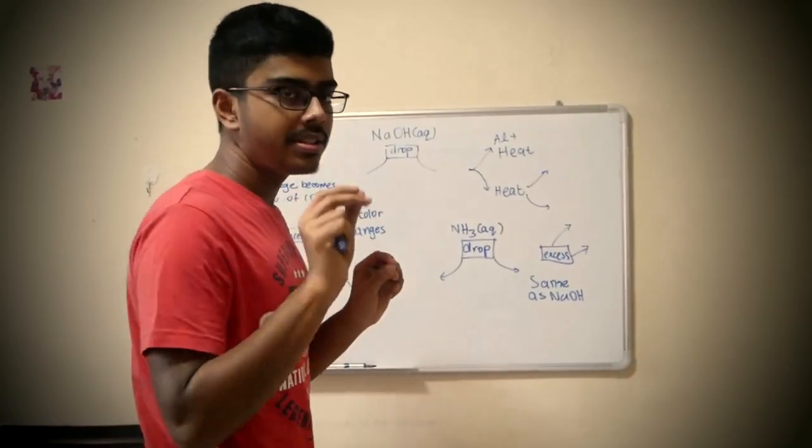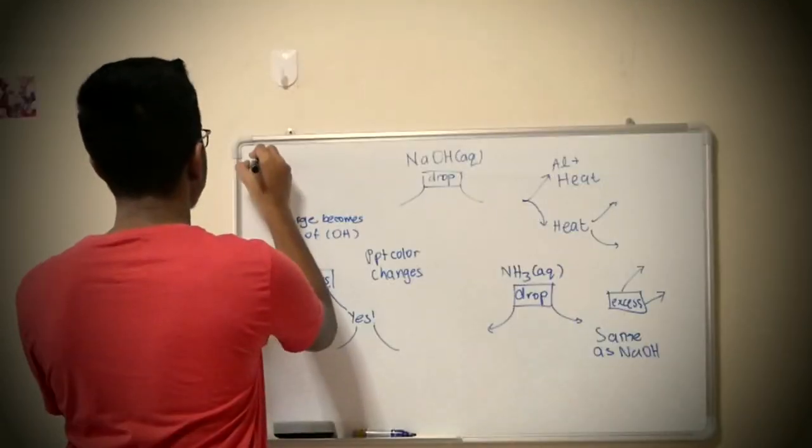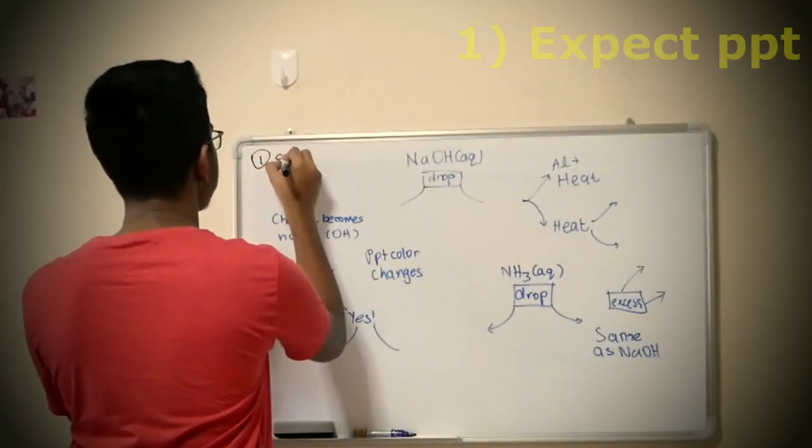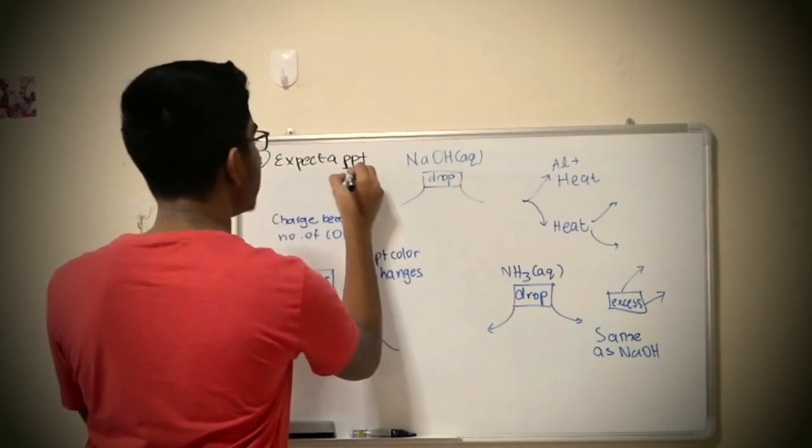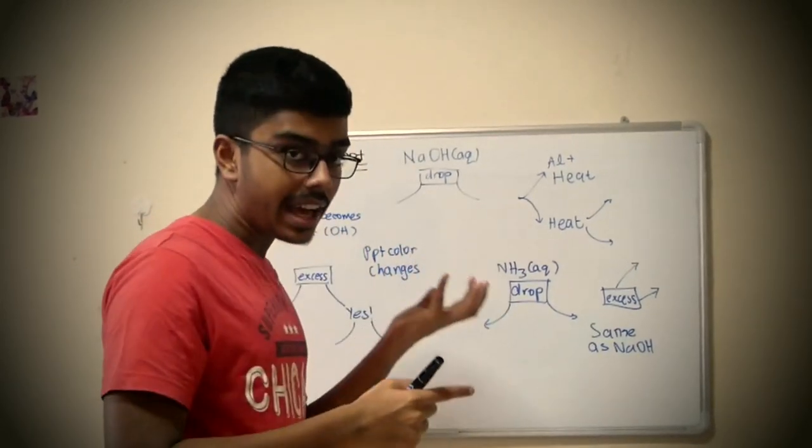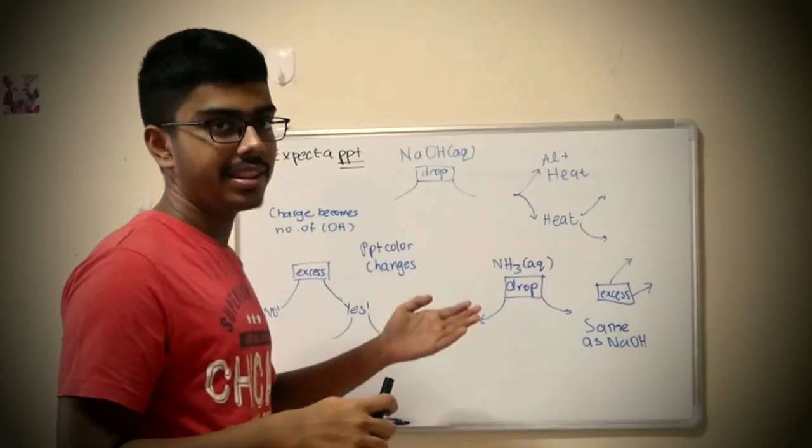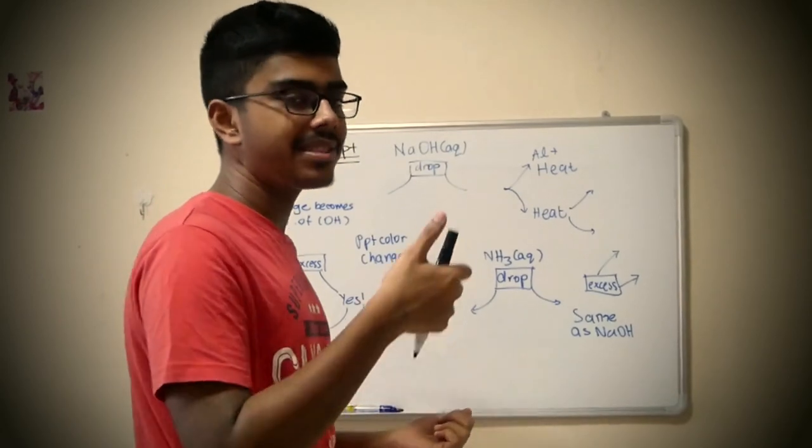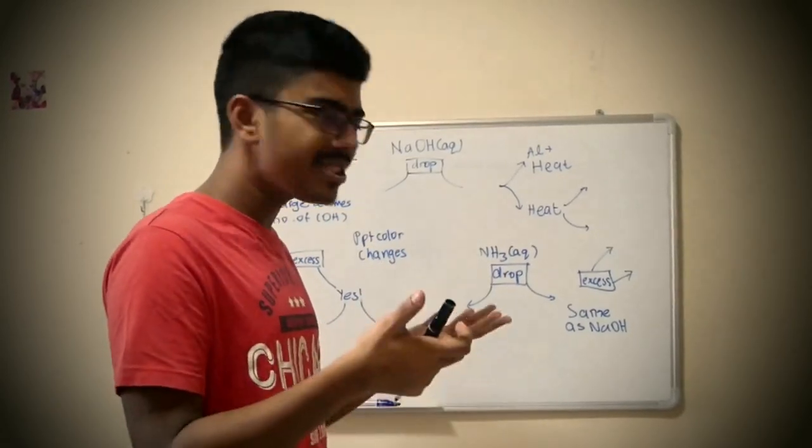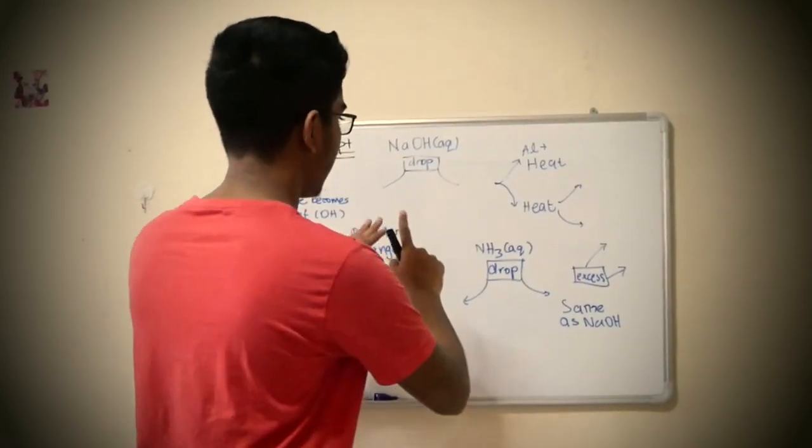First thing you should do when you see NaOH aqueous is number one, expect a precipitate. We're going to add NaOH aqueous drop-wise in the test tube. Let's visualize this. Now there are two things that can happen: either there's a precipitate or there's no precipitate.